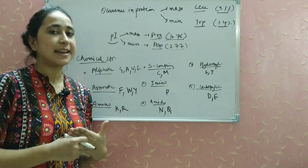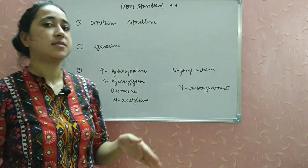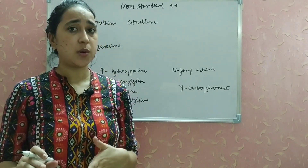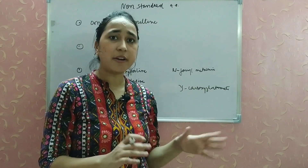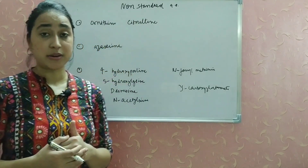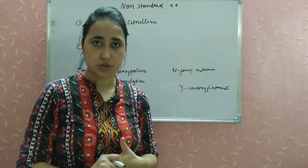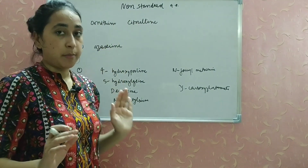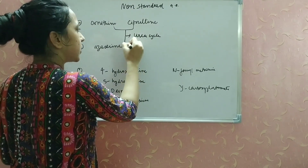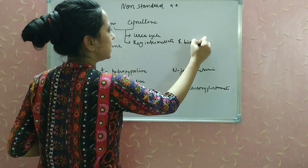Now moving on to non-standard amino acids. Out of more than 300 amino acids in the cell, 22 constitute proteins. The remaining amino acids are not directly involved in protein synthesis but have other important biological functions — these are called non-standard or non-conventional amino acids. Ornithine and citrulline are examples involved in the urea cycle and are key intermediates for arginine biosynthesis. Azaserine is a non-standard amino acid that acts as an antibiotic.